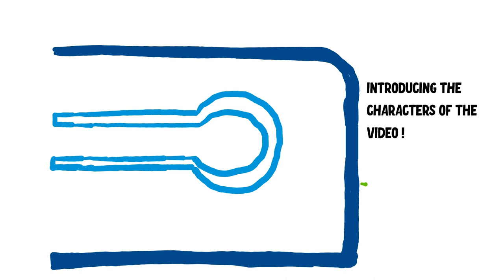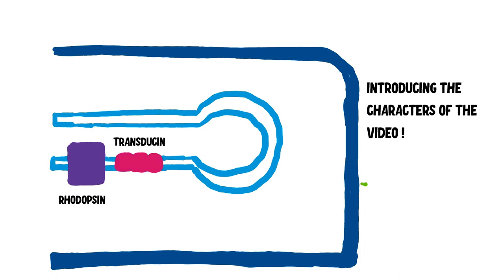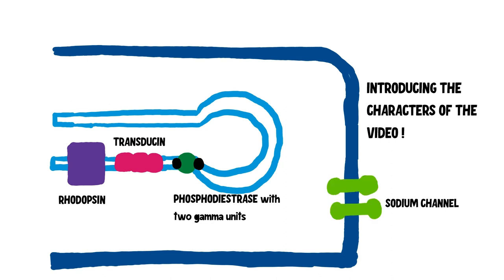In this video we will study rhodopsin and how it affects transducin. Transducin affects phosphodiesterase. You should know that phosphodiesterase always exists with its two gamma subunits. We will also talk about the sodium channels as an important character of the story.